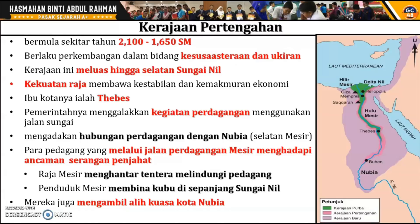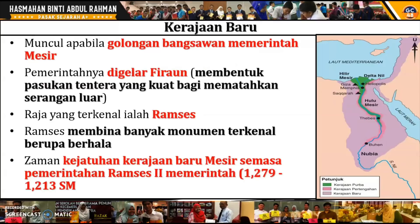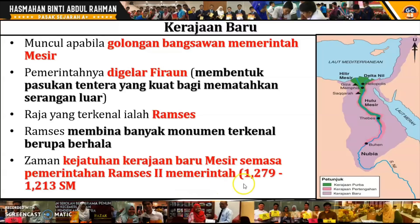Kerajaan Baru muncul apabila pemerintahan mula diperintah oleh golongan bangsawan, dan pemerintahnya menggelar diri mereka sebagai Firaun. Firaun telah membentuk pasukan tentera yang kuat bagi mematahkan serangan luar. Firaun yang terkenal ialah Ramses, di mana pada zaman beliau banyak monumen-monumen terkenal telah dibina. Zaman kejatuhan Kerajaan Baru Mesir adalah semasa pemerintahan Ramses II yang memerintah dari 1279 hingga 1213 sebelum Masihi.